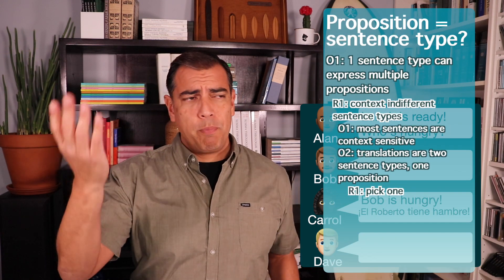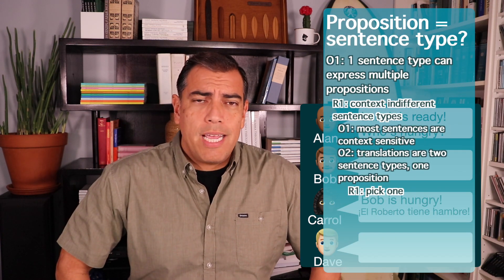So a proposition must be different than a sentence type. Translations are kind of a monkey wrench in the whole idea that we could specify our sentence type, get rid of all indexicals, and say that a very specific sentence type could be identical to a proposition. But you may say: translations are a problem - just pick one of the languages. Let's say just pick Spanish and say that sentence type in Spanish is identical to the proposition.